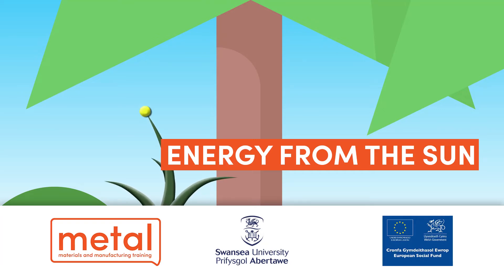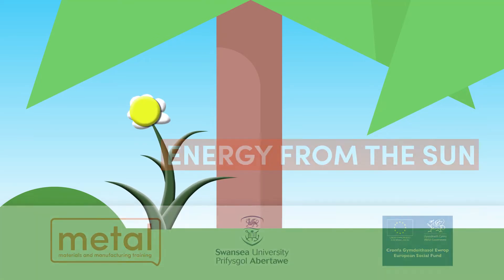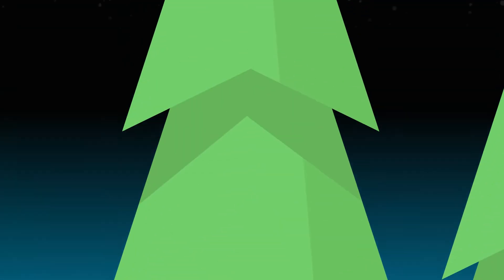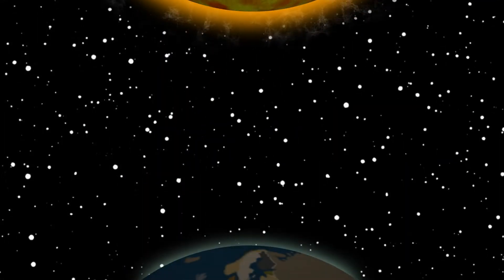Almost all of the Earth's energy input comes from the Sun. The Sun is therefore vital to life on Earth, but not all of the sunlight that strikes the top of the atmosphere is converted into energy at the surface of the Earth.